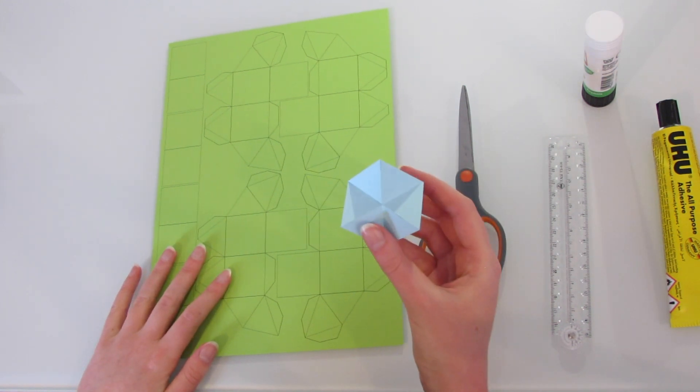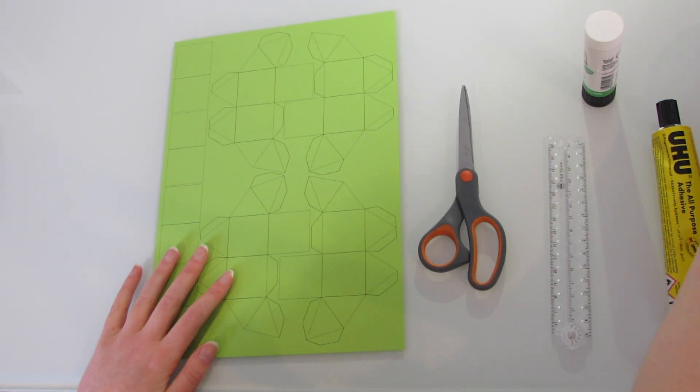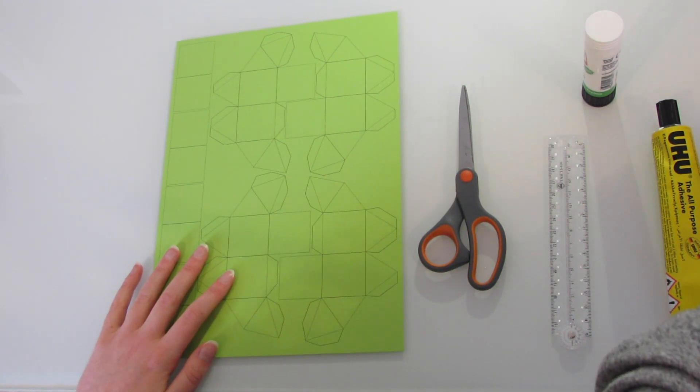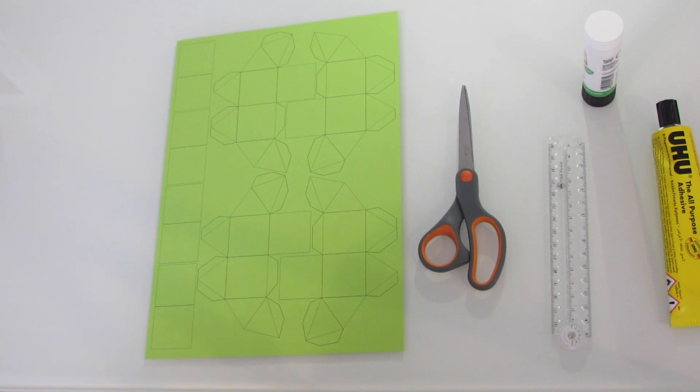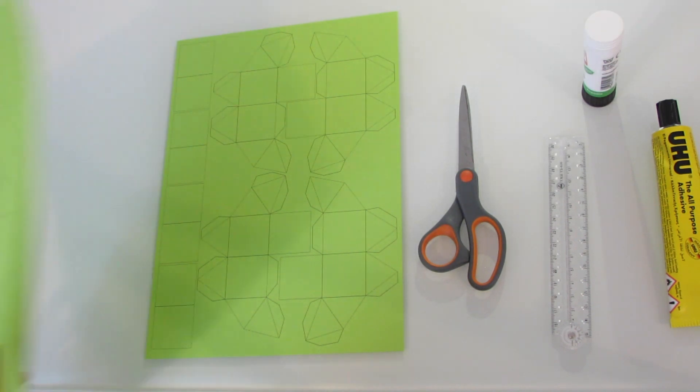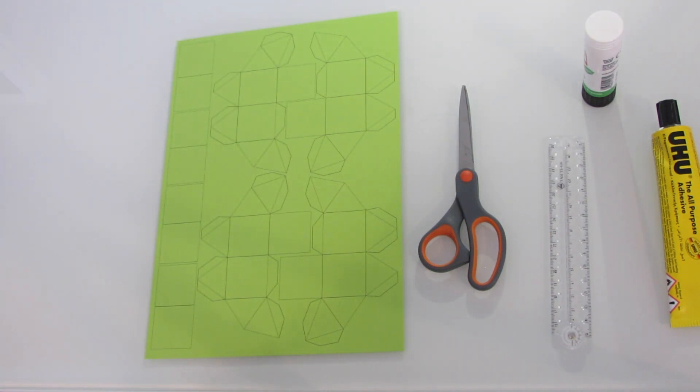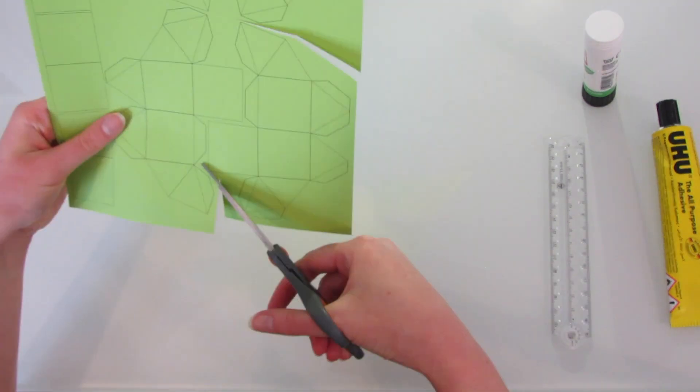You could also make a giant one, putting one net on a page and having eight pages. I found paper is better for the smaller size, particularly if you want to make two and fit them together. The squares down the side are for joining the modules together. The first step is to cut out each net accurately.